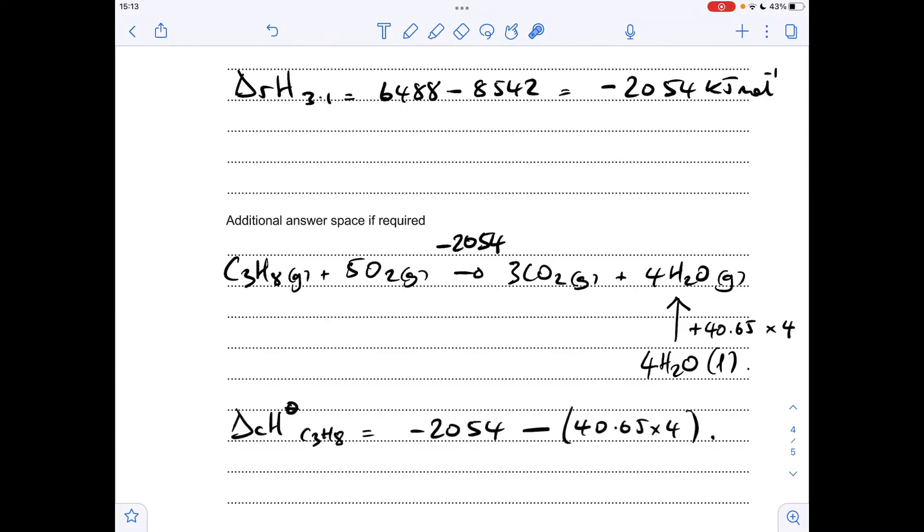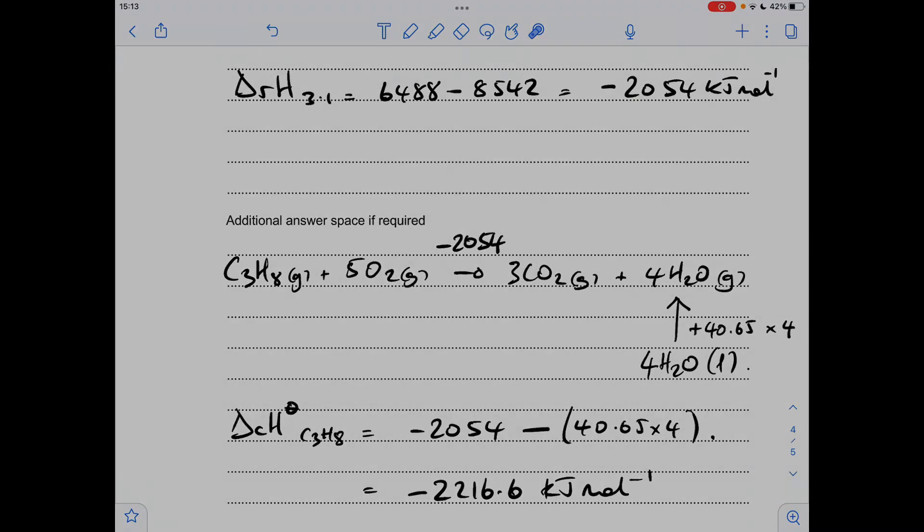So we'll put the numbers in, we've got minus 2054 for this part, but then we're going to subtract 4 times the enthalpy change of vaporization of H2O, so it's minus 40.65 times 4, which gives a final answer of minus 2216.6 kilojoules per mole.